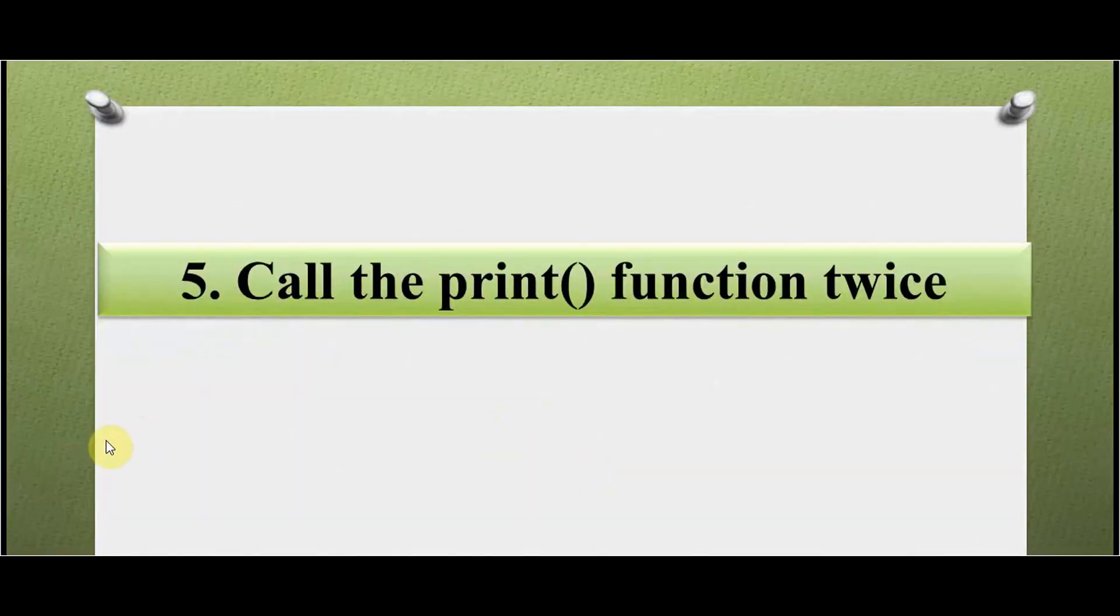The next situation is calling the print function twice. This is the most common mistake which beginners do. We'll be using a print statement inside the function as well as when we are calling the function. In that case it will return None.